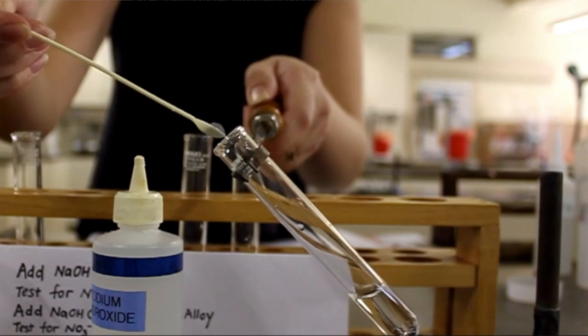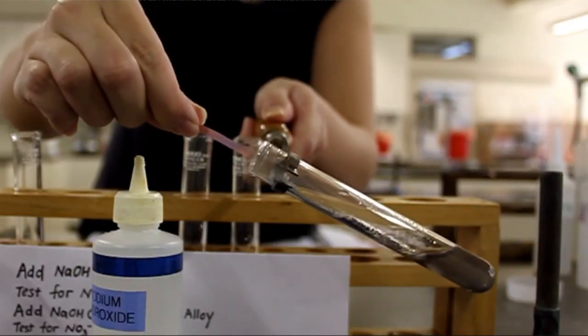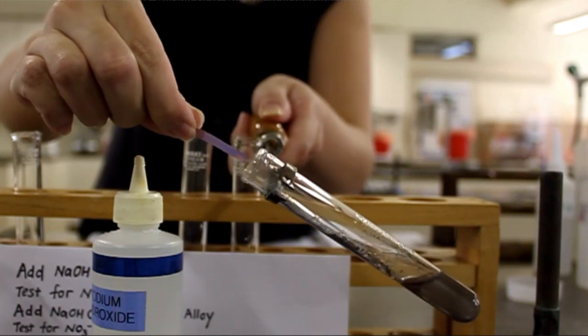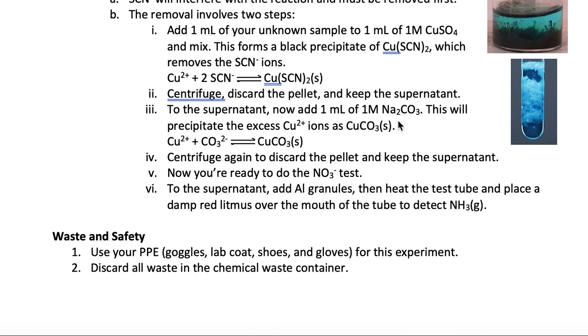To test for a nitrate ion, you're going to add a scoopula of aluminum granules, heat the test tube, and then place the damp red litmus paper over the mouth of the test tube to detect the presence of ammonia. Again, if nitrate is originally present, then the litmus paper will turn blue. If nitrate is not there, then the red litmus paper will not turn blue.